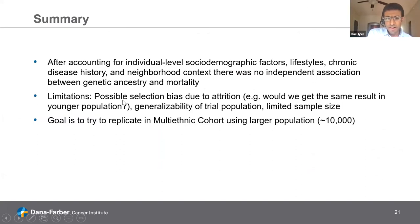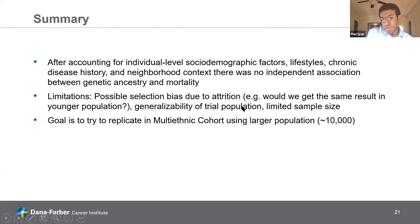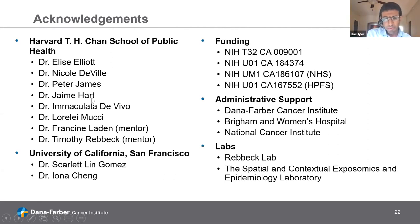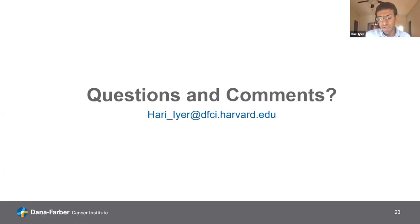There are some limitations: it would be interesting to look at a younger population, since this is a clinical trial with largely middle-aged participants. There are also questions about generalizability of a population recruited explicitly for a clinical trial, and we only had about 2,000 participants. Our goal is to replicate this analysis in the much larger Multi-Ethnic Cohort, which will give us around 10,000 participants. These are my co-authors from HSPH and UCSF, and some funding resources that have supported this work. Thanks very much for listening — I'd appreciate any questions and comments.